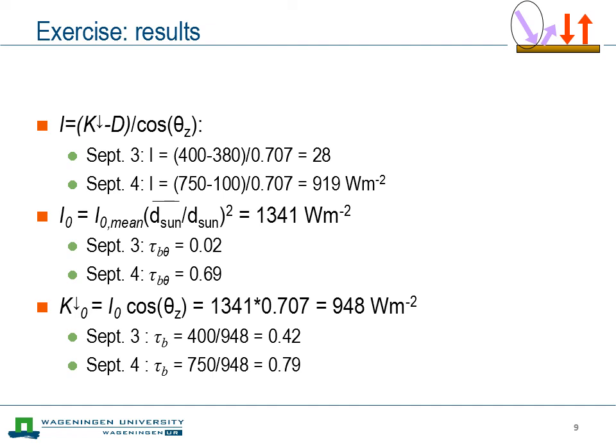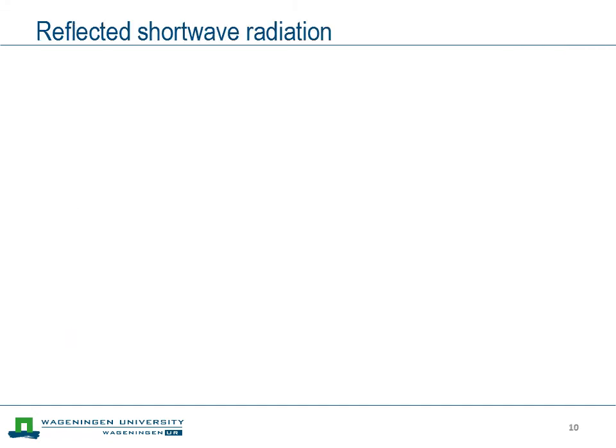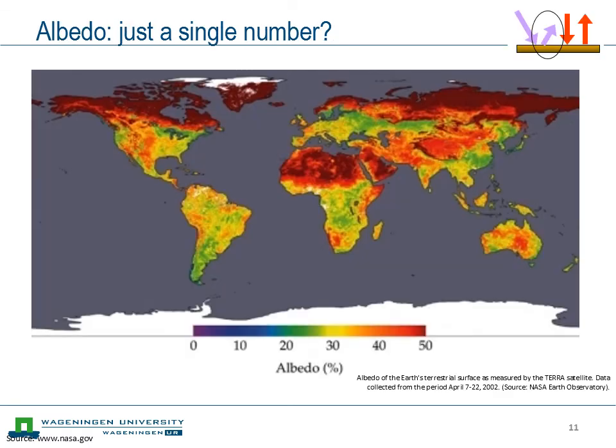Enough said about incoming radiation. Now let's focus on the amount of reflected shortwave radiation. The first thing you might think of is the albedo — the fraction of radiation that's reflected. Here we have a global map showing that albedo varies over a significant range: over land it can go from as low as about 10% up to 50%, very much depending on the amount of vegetation, bare soil, and whether there is snow.